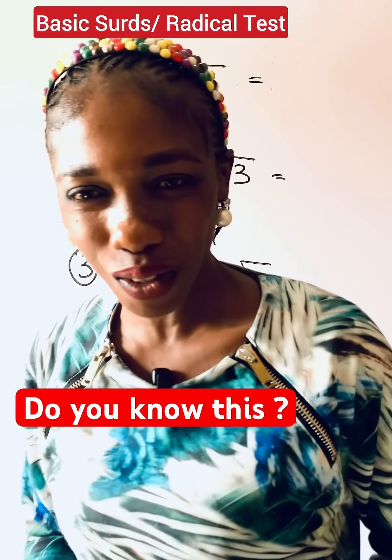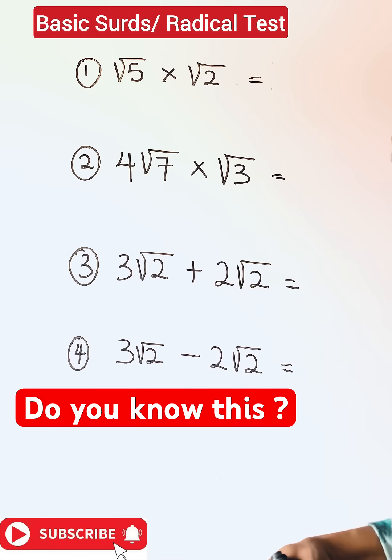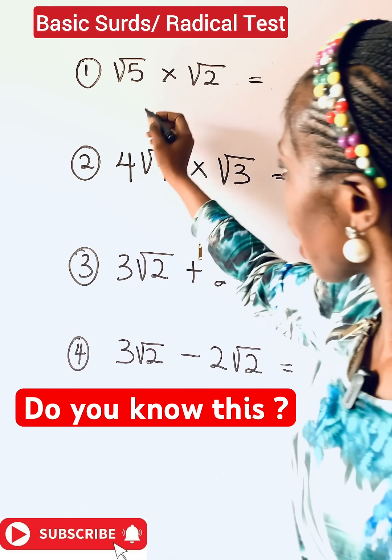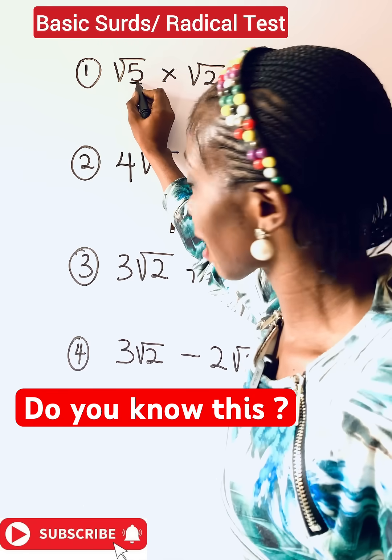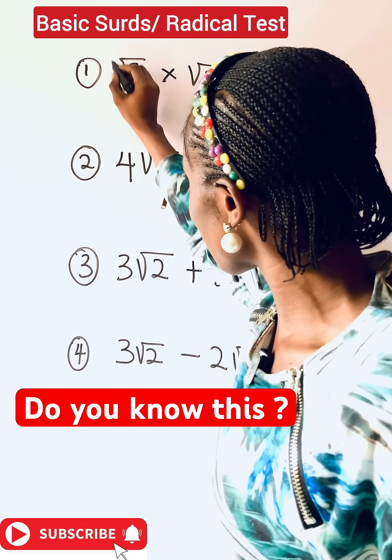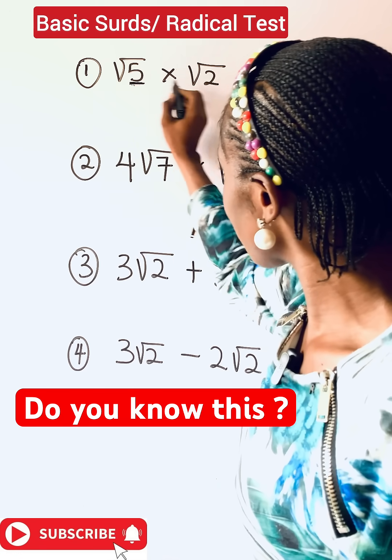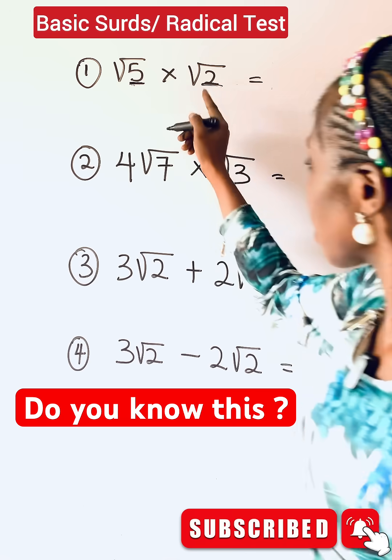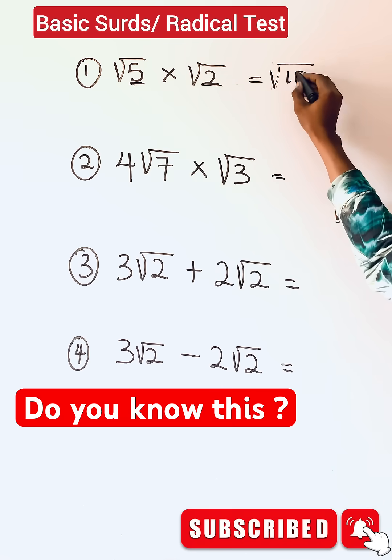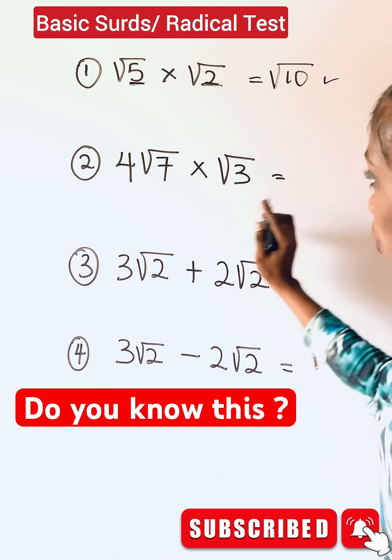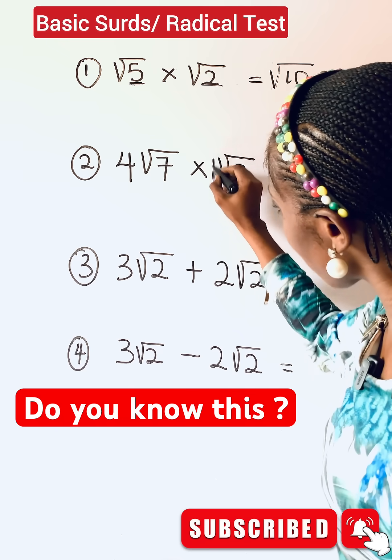Test yourself with this basic surd or radical question. This is multiplication - when you multiply radicals, the number inside the radical sign is what you multiply. So when you're multiplying radical versus radical, multiply these two - it gives you √10.